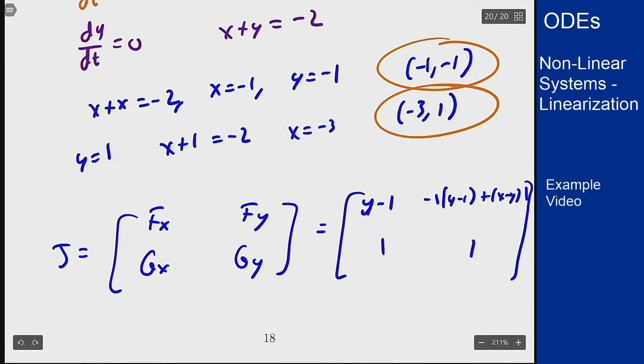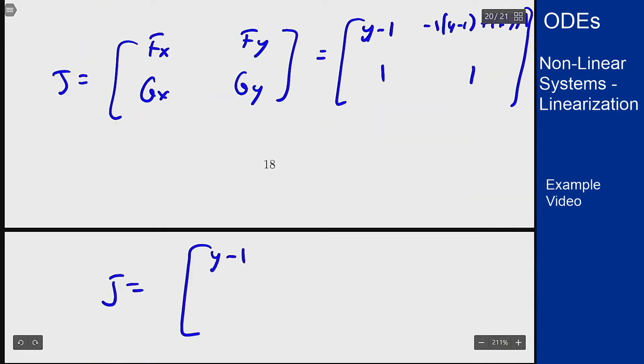Thus for this full matrix we get y minus 1, x minus 2y plus 1, 1 and 1.